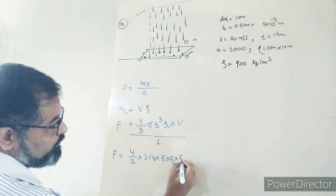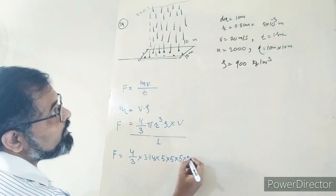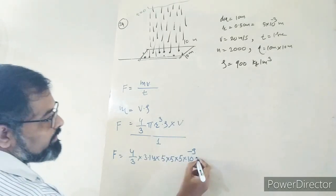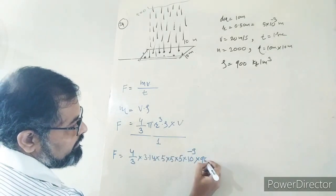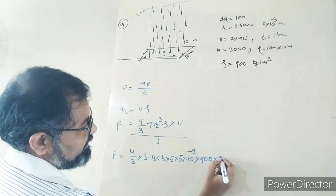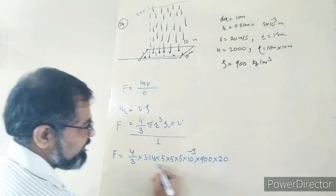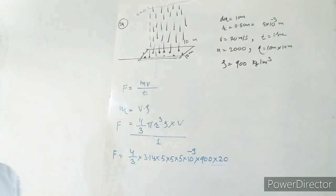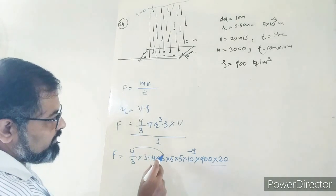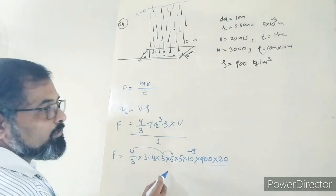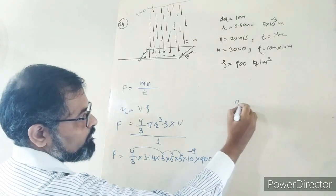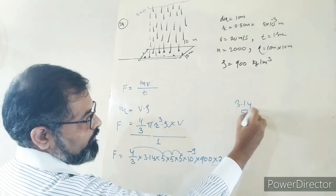The radius becomes 0.5 × 10⁻² m, giving r³ as approximately 10⁻⁶ m³. Density is 900 kg/m³, velocity is 20 m/s, divided by time of 1 second. Calculating: 500 × 3.14 × 500, working through the numerical values step by step.